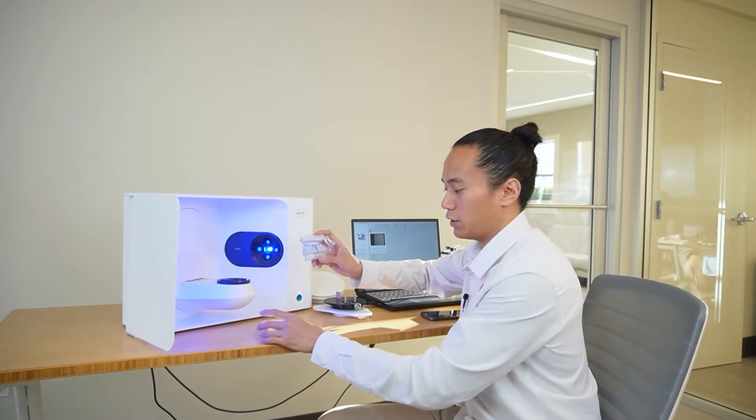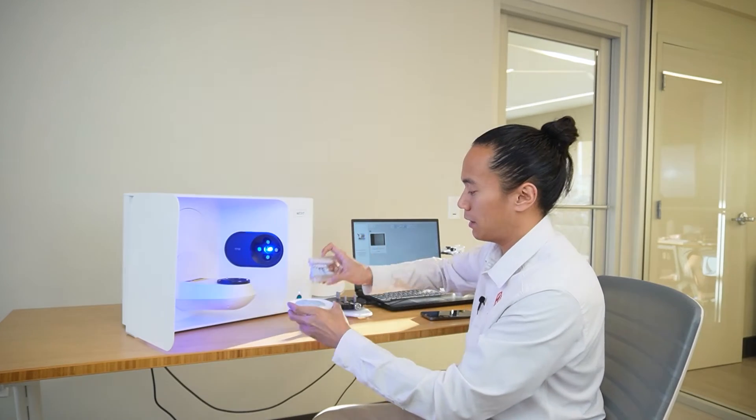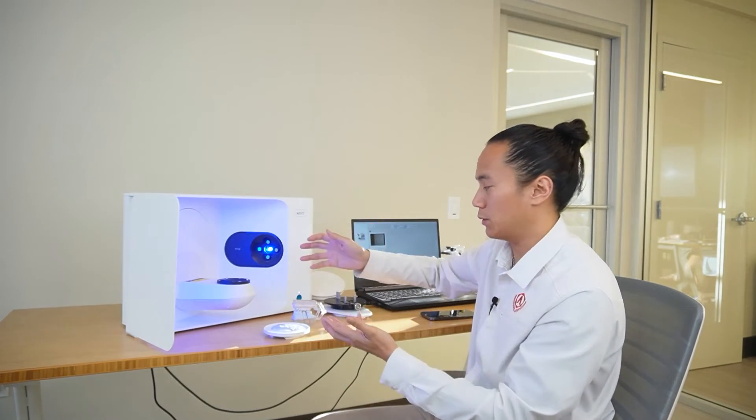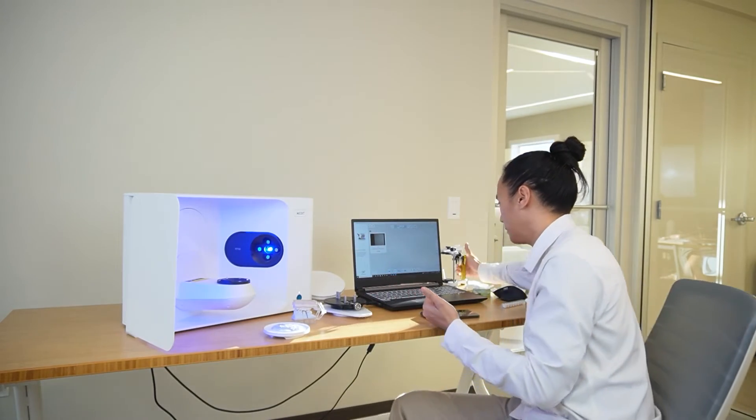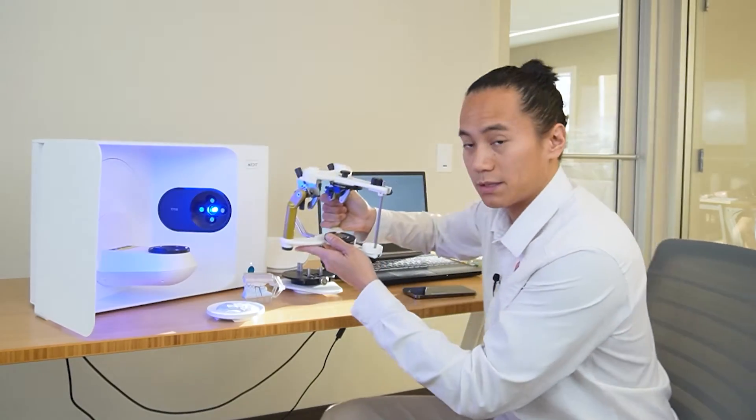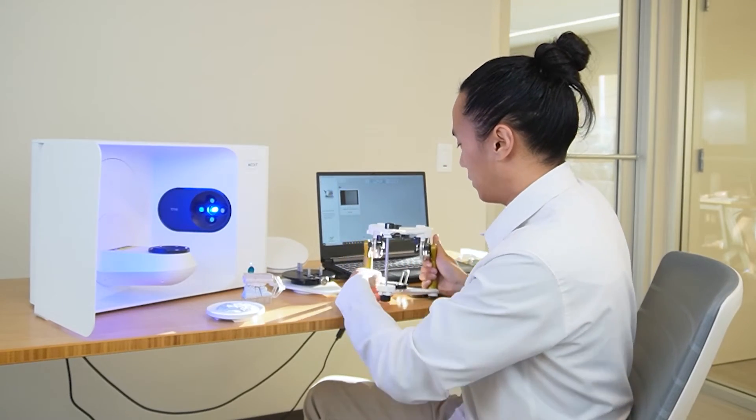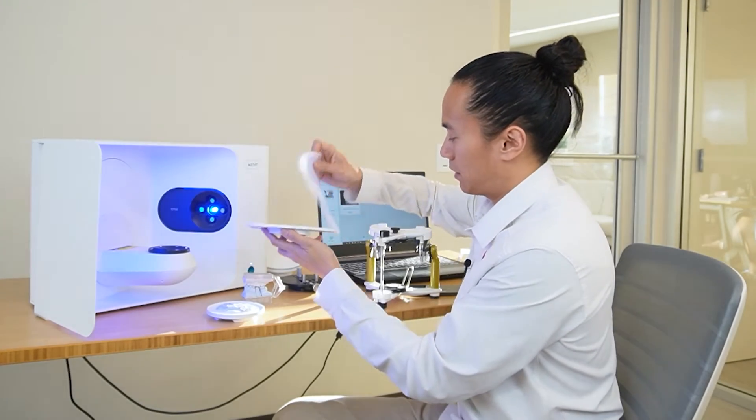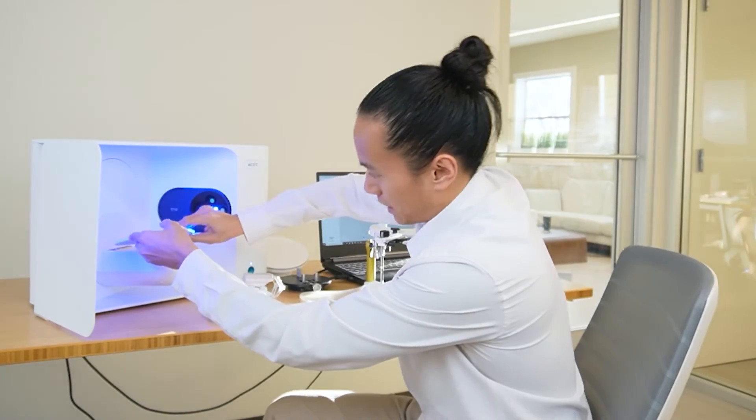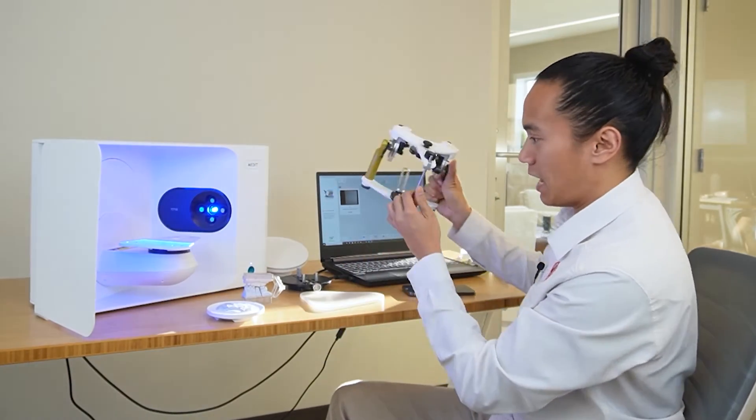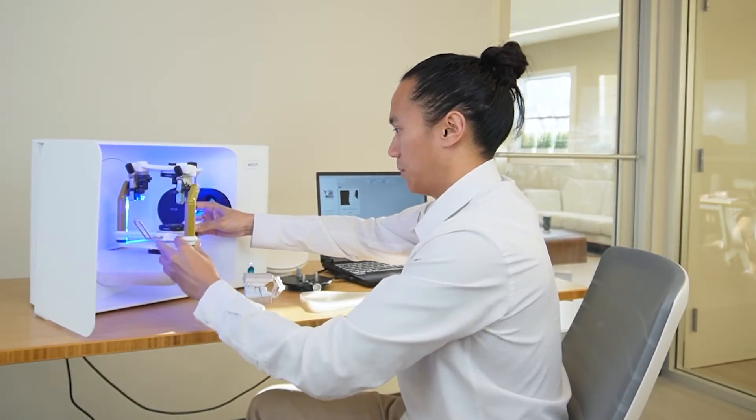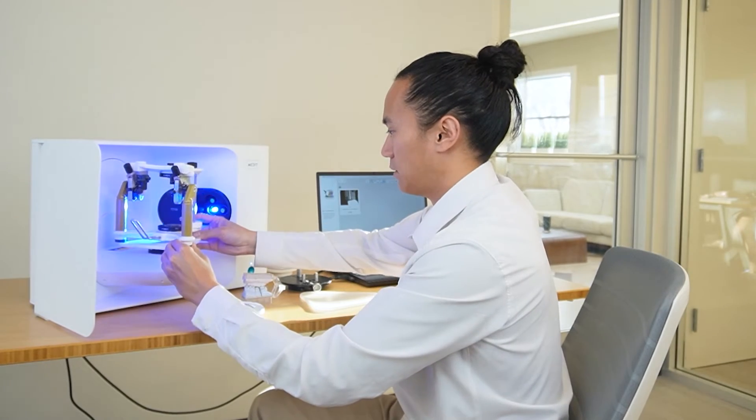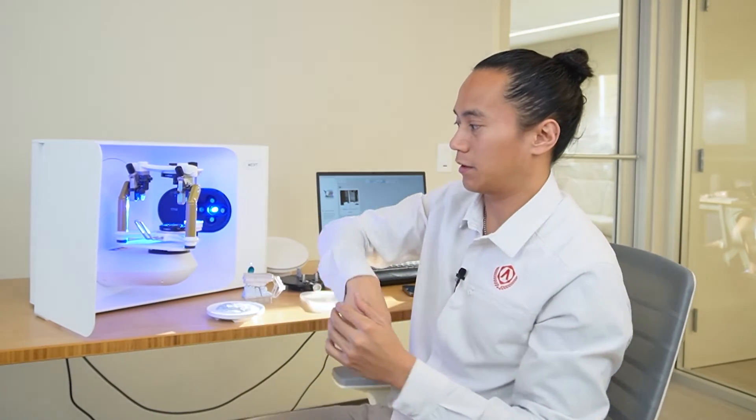But if we had a case that warranted the use of a full articulator that we had mentioned before, something like this, we would actually use the articulator base plate instead. So we would just take the articulator base plate, place that right here, and then take your articulator and center it as best you can along the plate here and scan it this way. Obviously, we would probably want to also remove the pin.